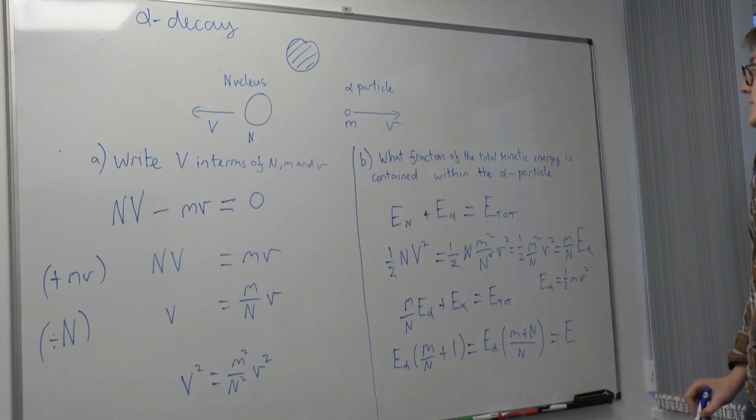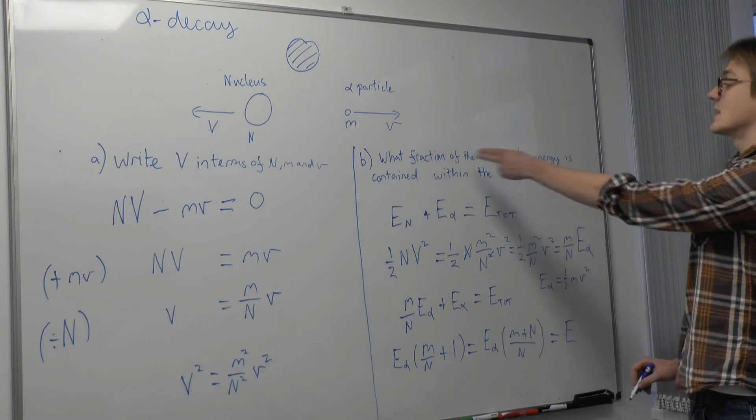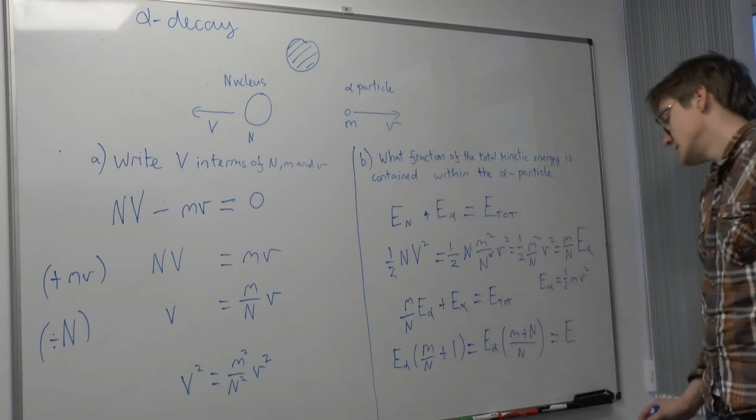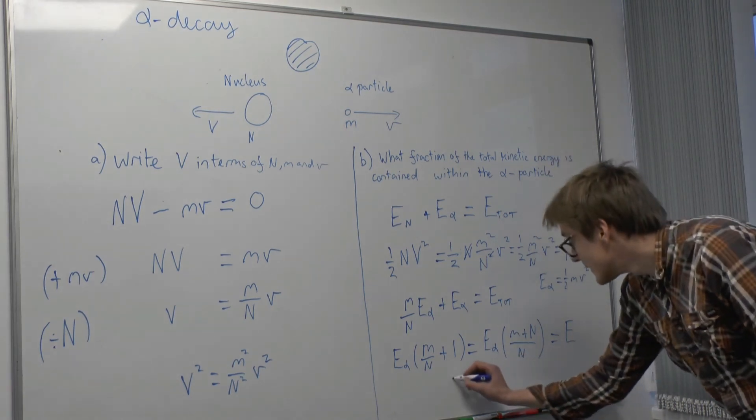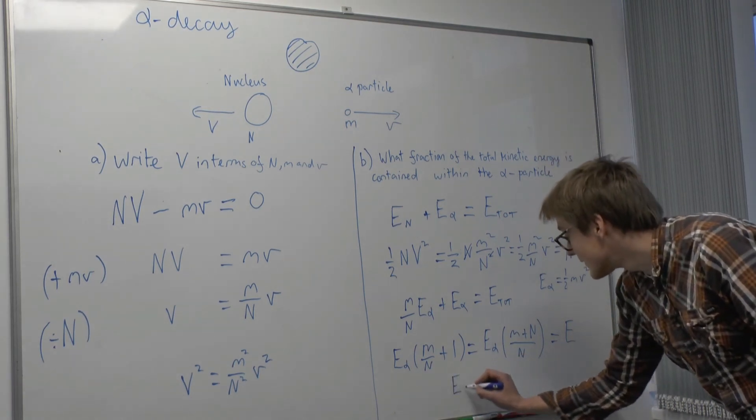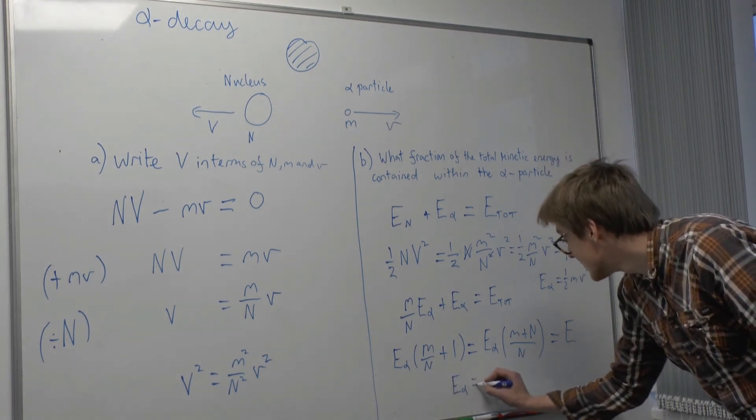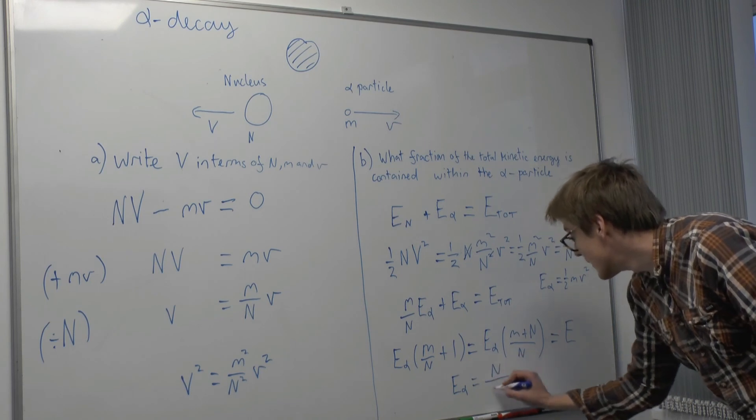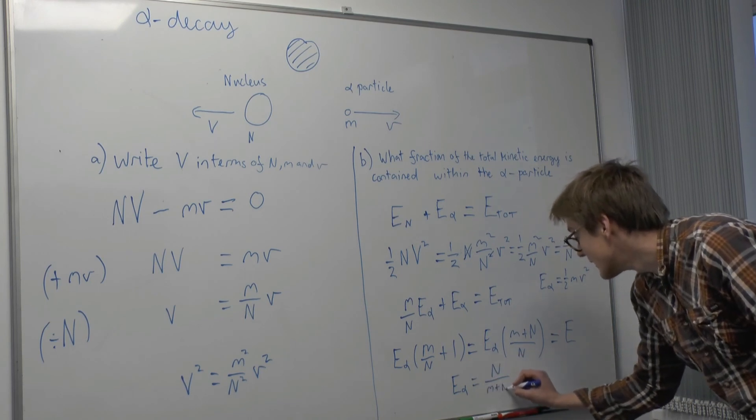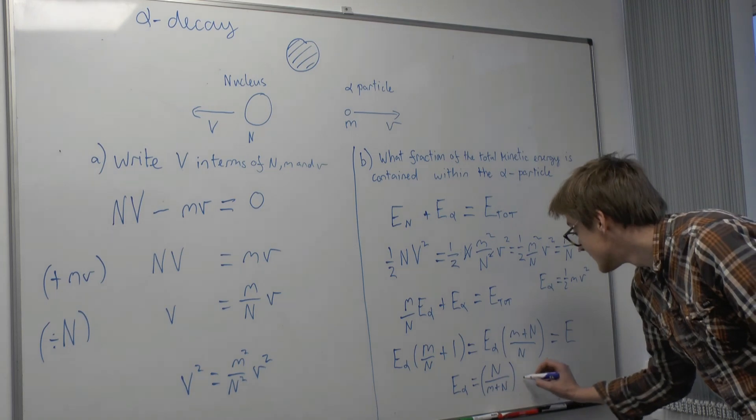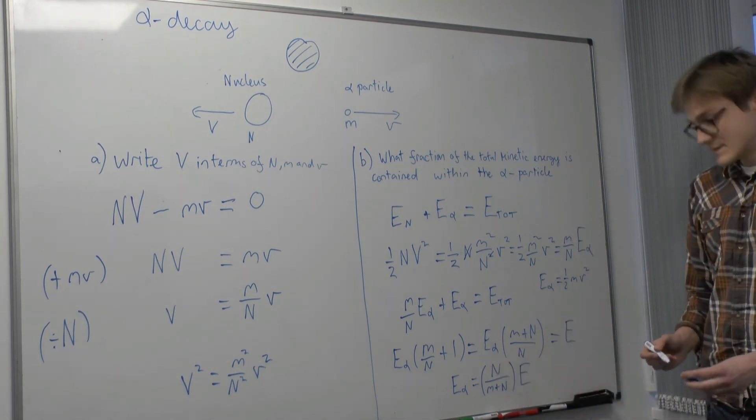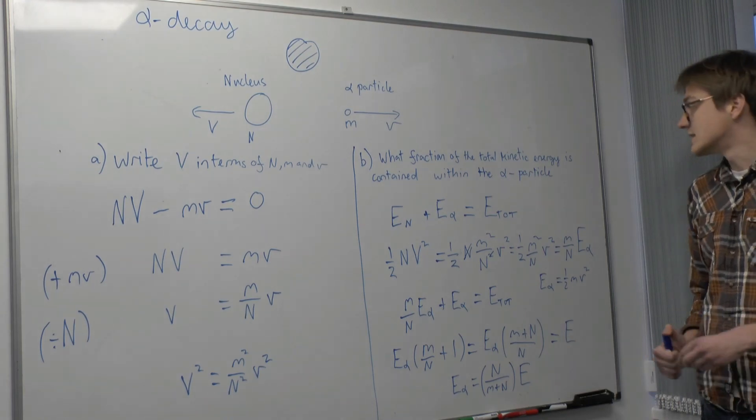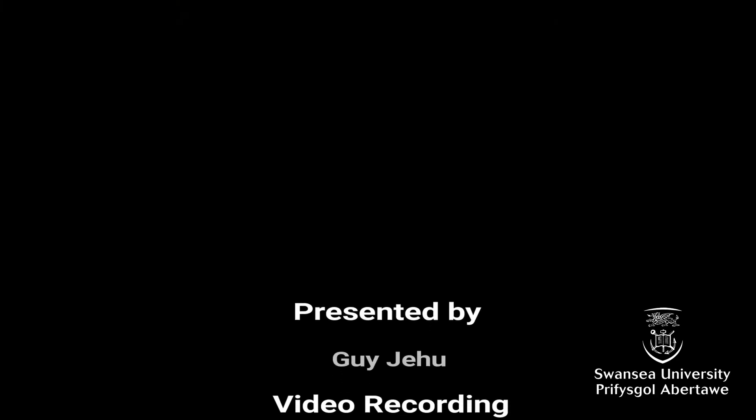So we want the fraction of the total kinetic energy that is contained within the alpha particle. So we divide by this factor here and we get E alpha equals N over little m plus N times E total. So that is the fraction of the total energy that is contained within the alpha particle.